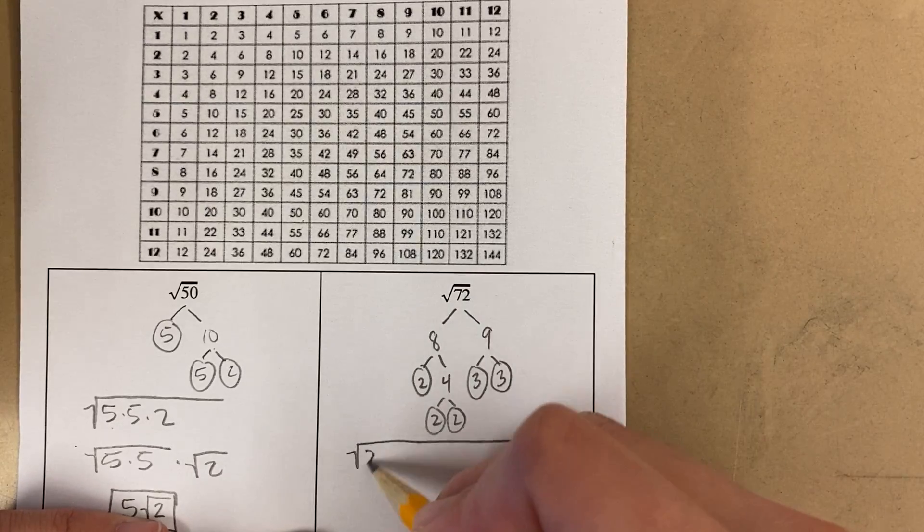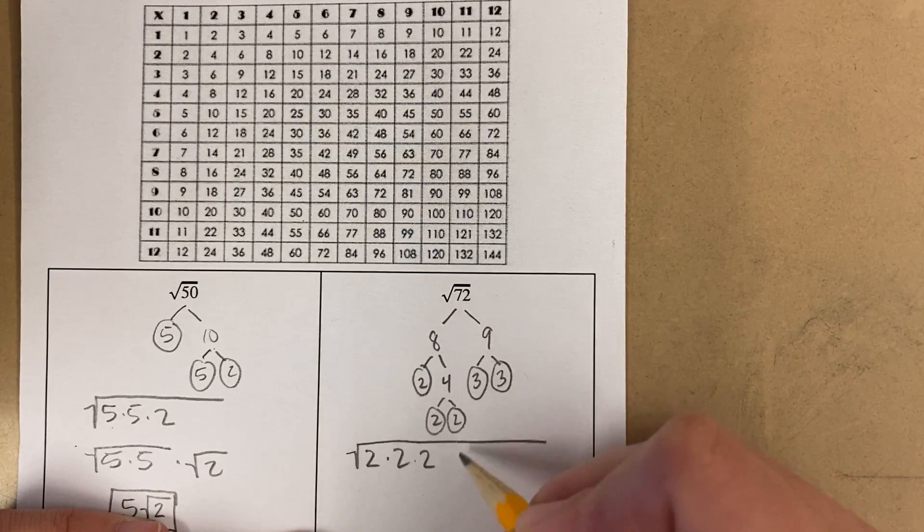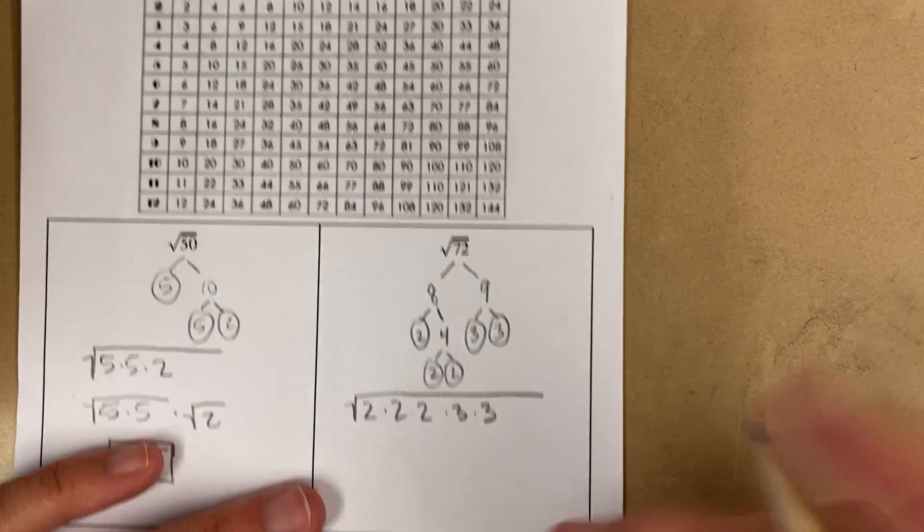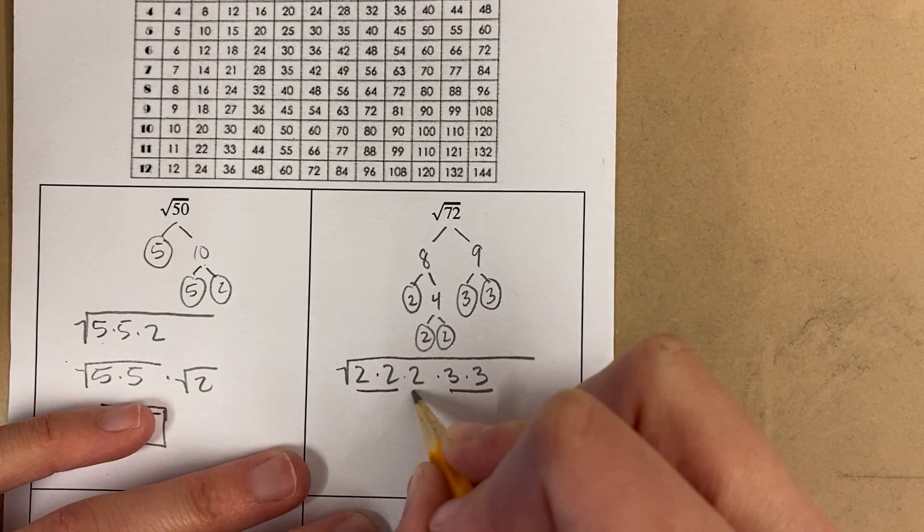Okay, now, when I write these out, I have three 2's. Be careful, don't miss any. And two 3's. So I have a double, a double, and a single.